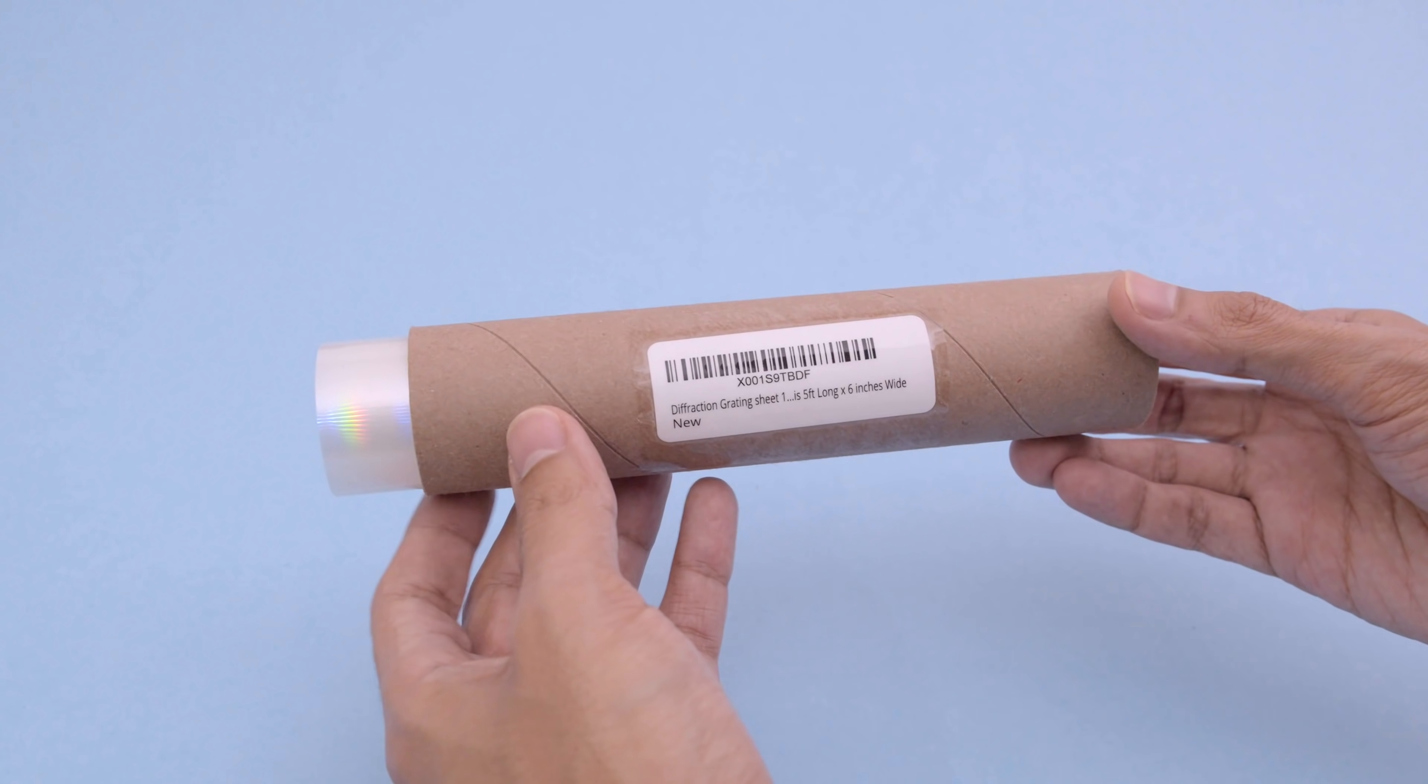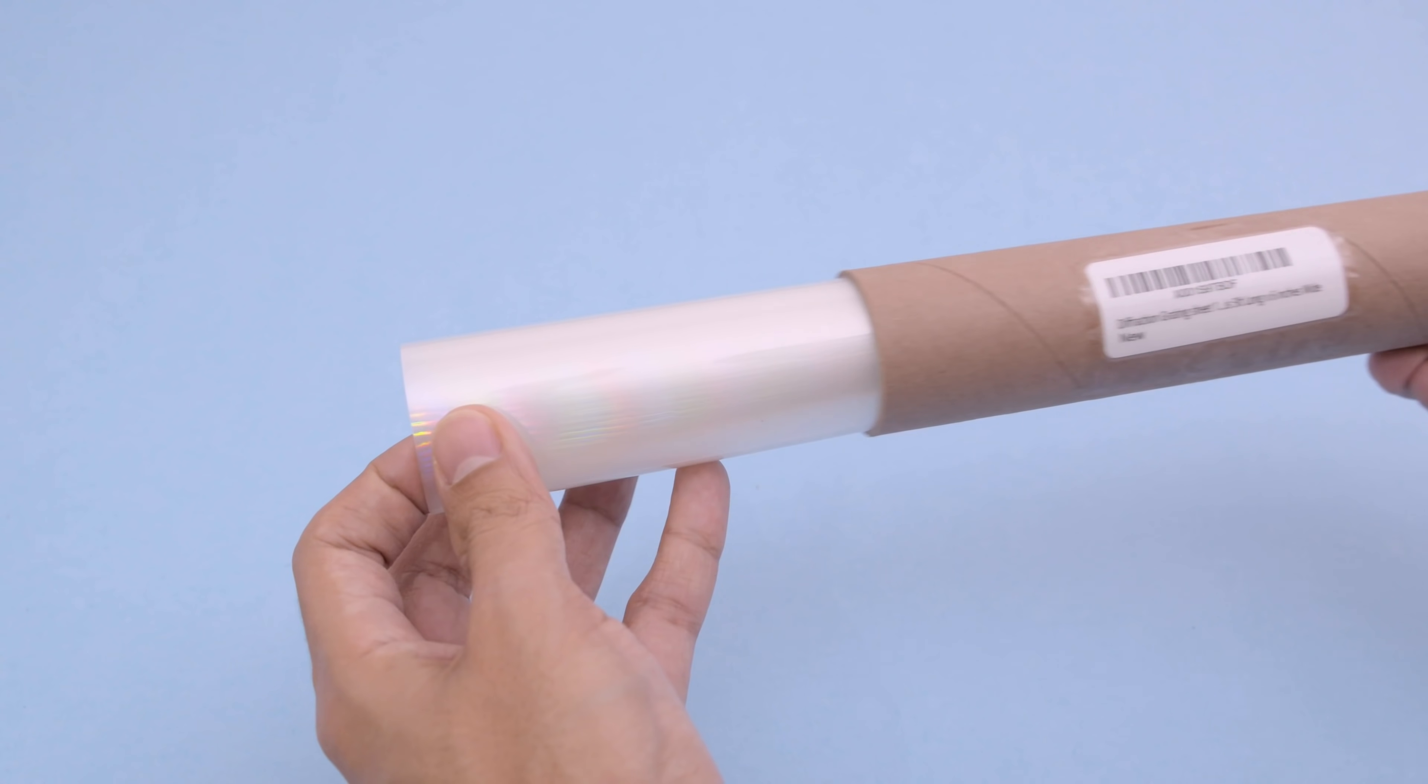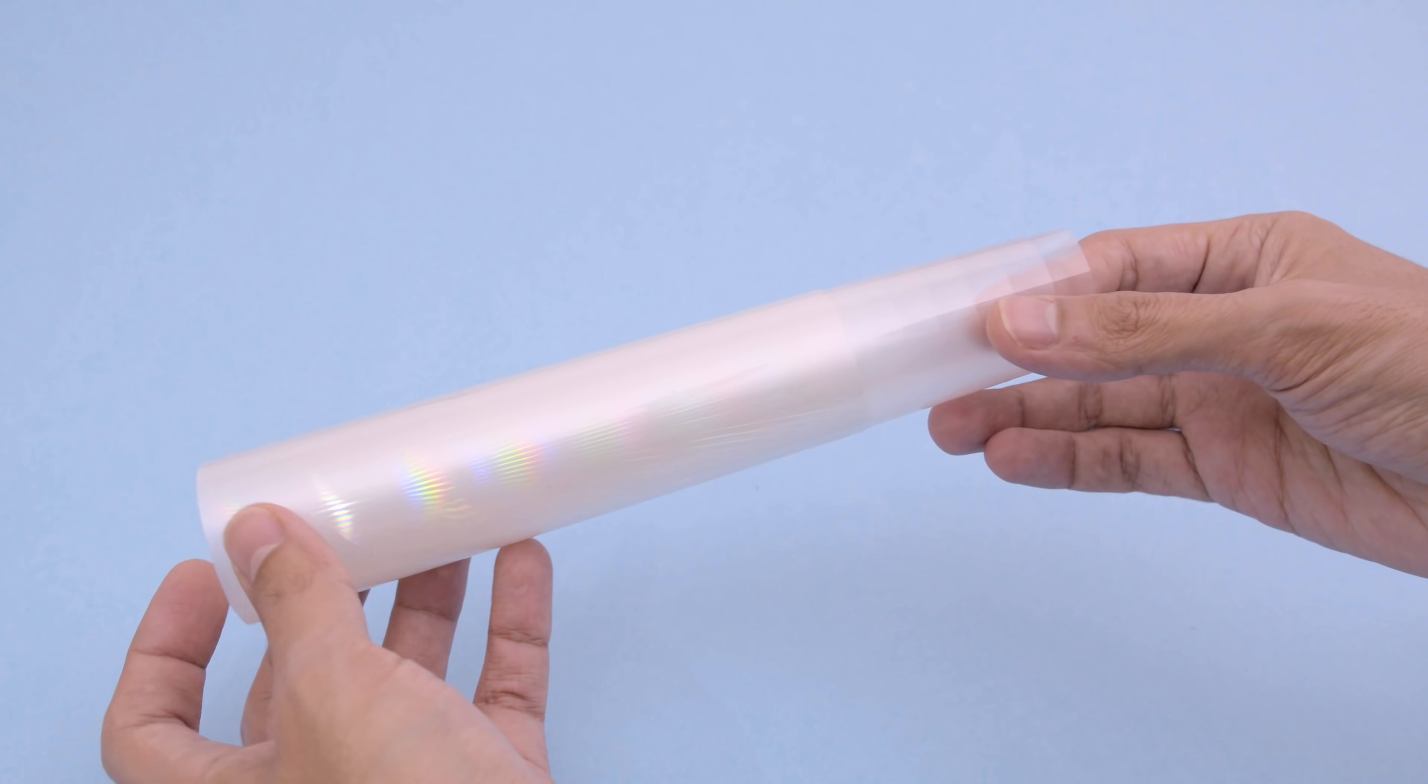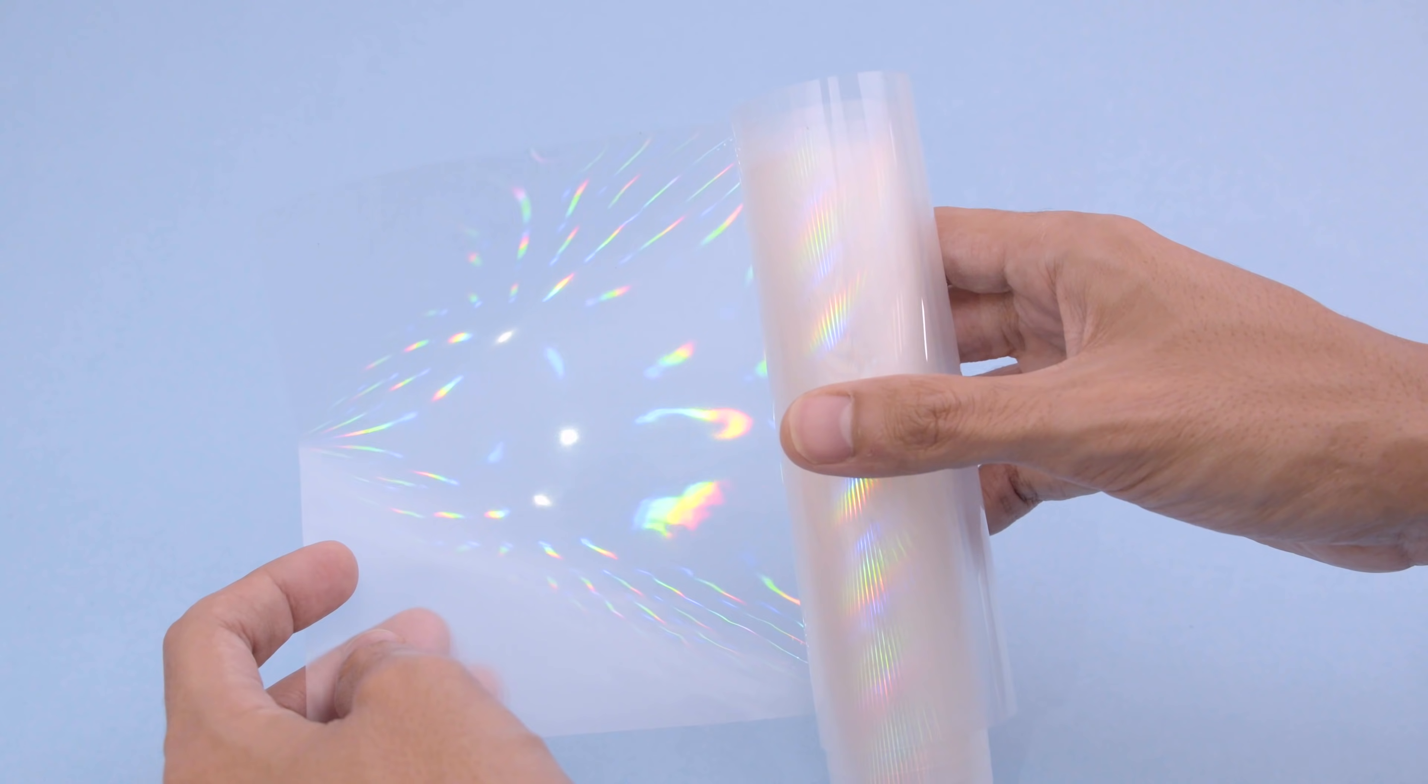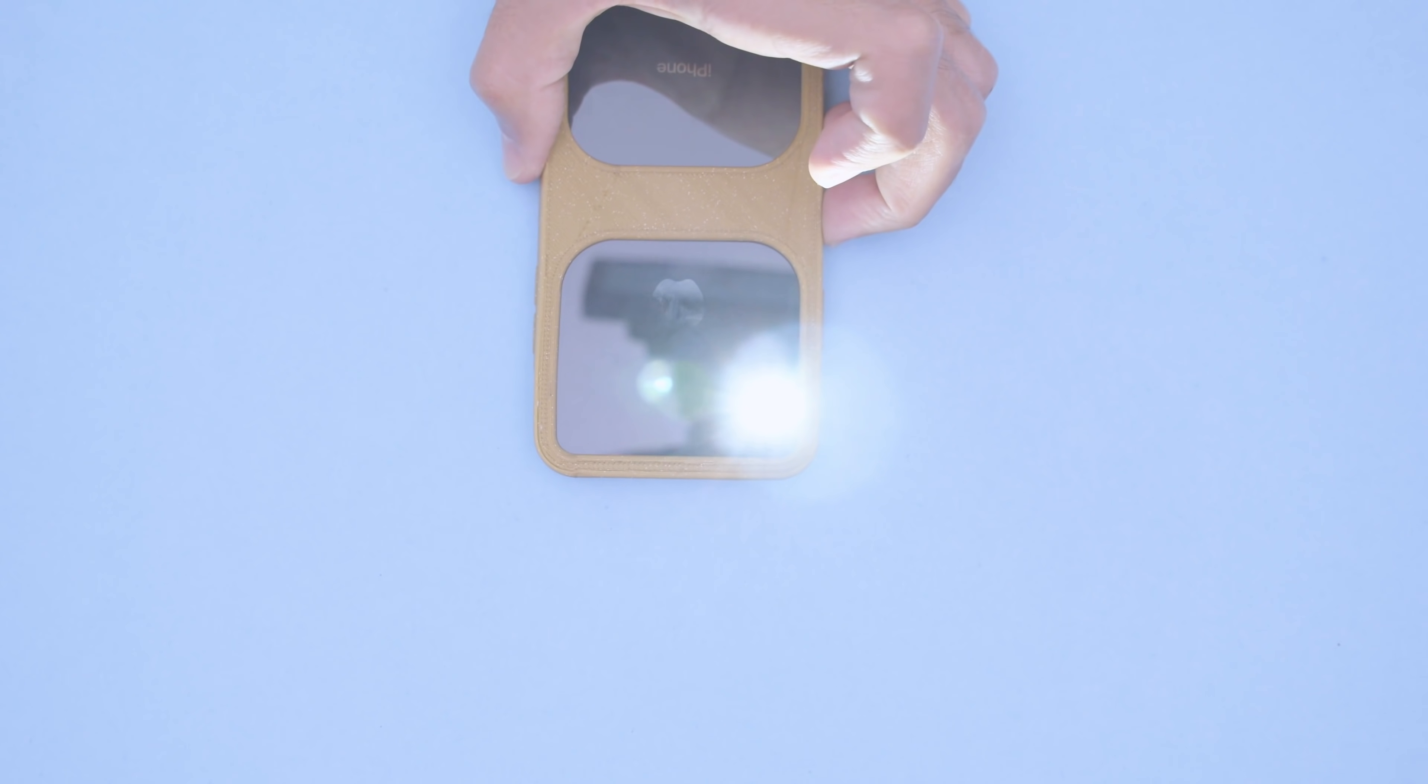These are diffraction grating sheets and they're mostly used in optics. This film can have different numbers of lines per millimeter and this actually splits light into separate beams of color. This stuff has tons of applications from creating laser light shows to making spectrometers.